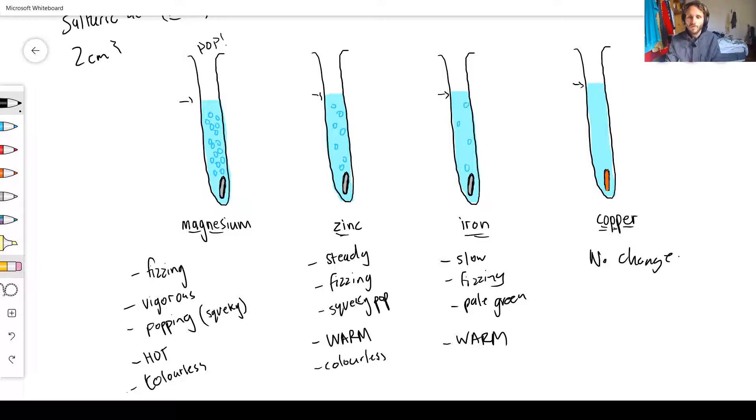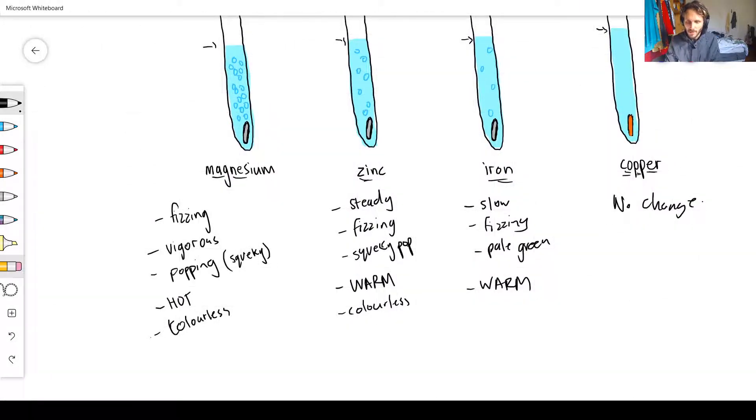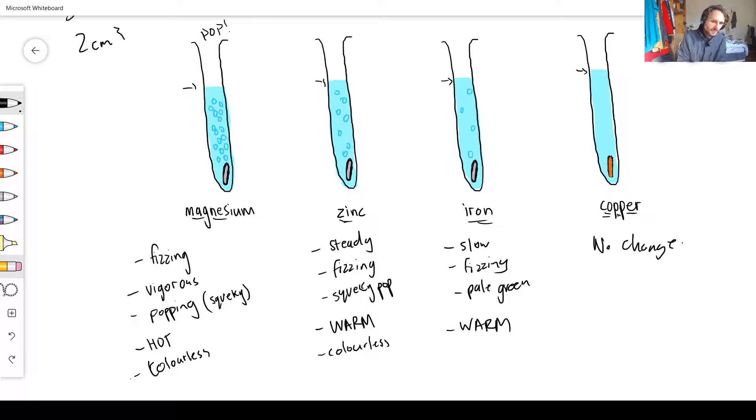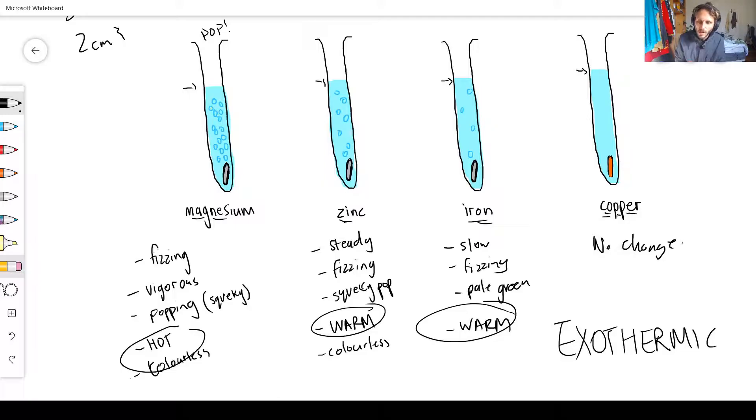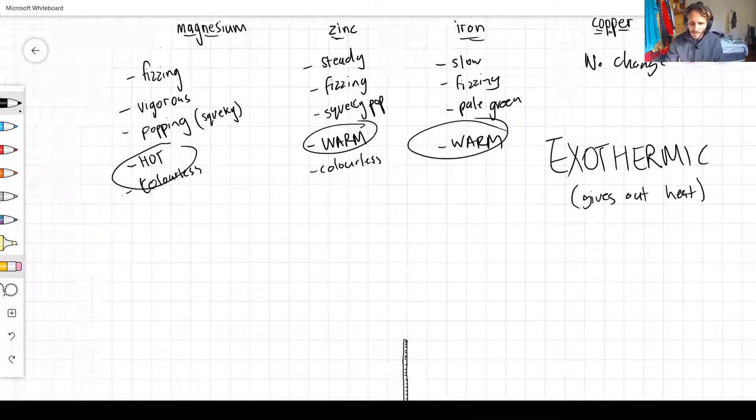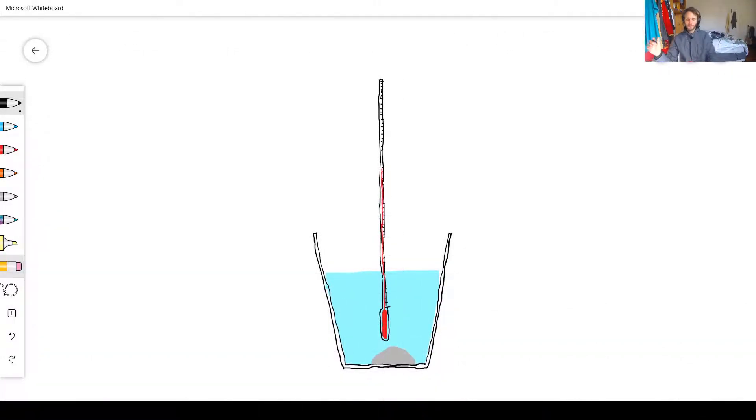There is no change in this last one. So that is a reaction between four metals and dilute sulfuric acid. If this one's hot and this one's warm, we can actually do an experiment and we can see which one raises the temperature the most. If a reaction happens and it gives out heat, it's called exothermic. It gives out heat, exit the building, go out. It's an exothermic reaction.